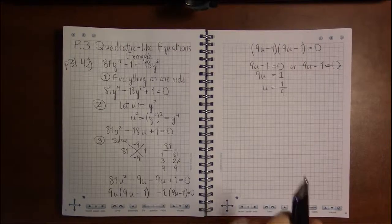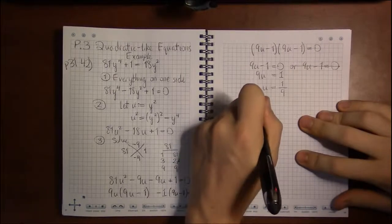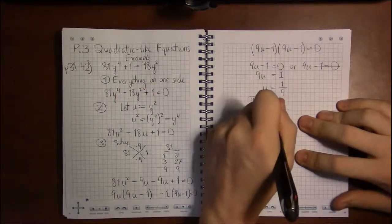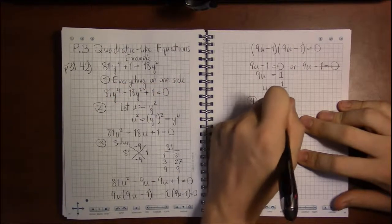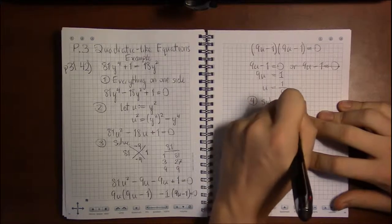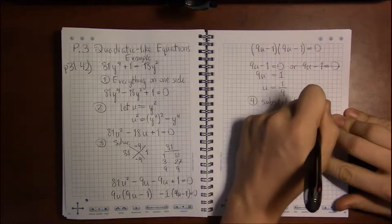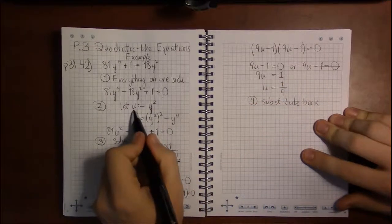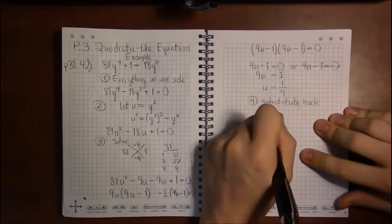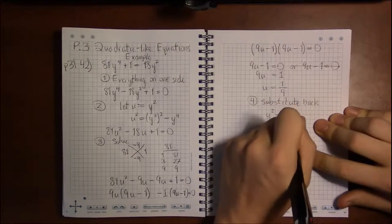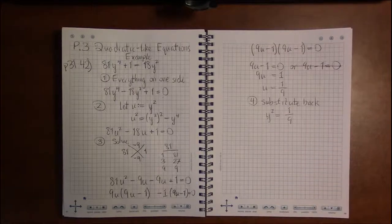No one asked us anything about u's. We've got to substitute back the original variable, which in this case is y. And we had u being y squared. So we have y squared being 1 ninth. And we solve this.